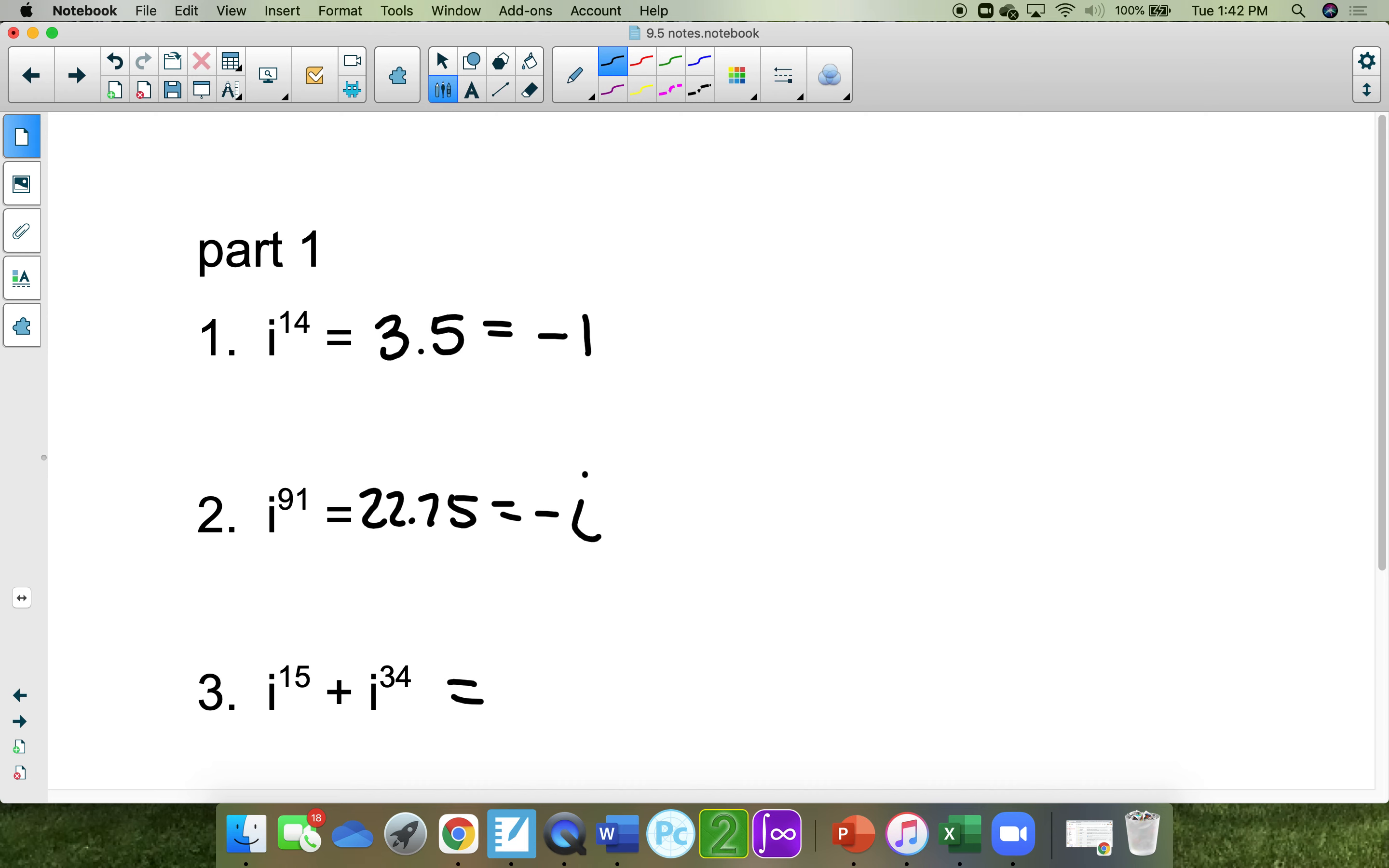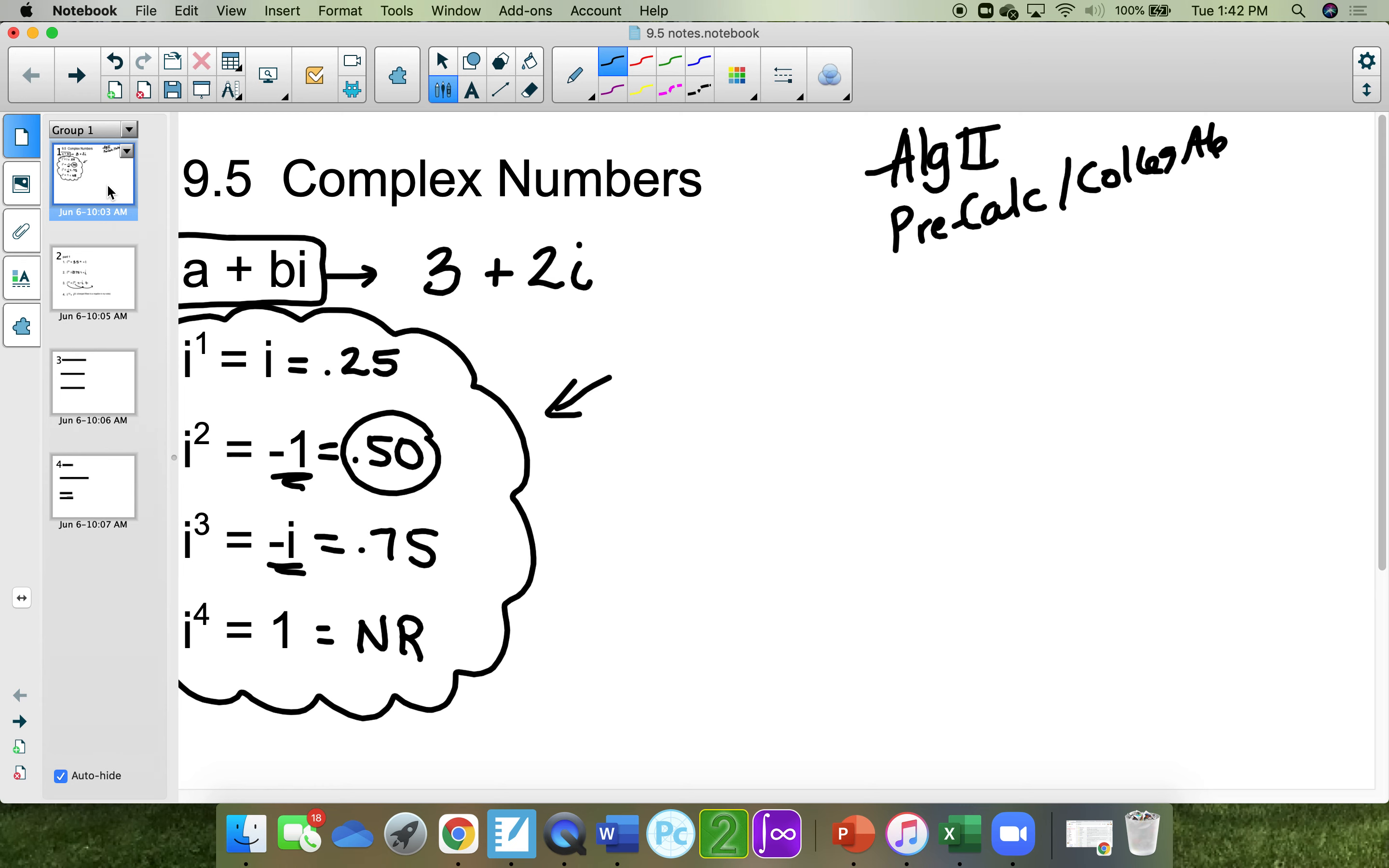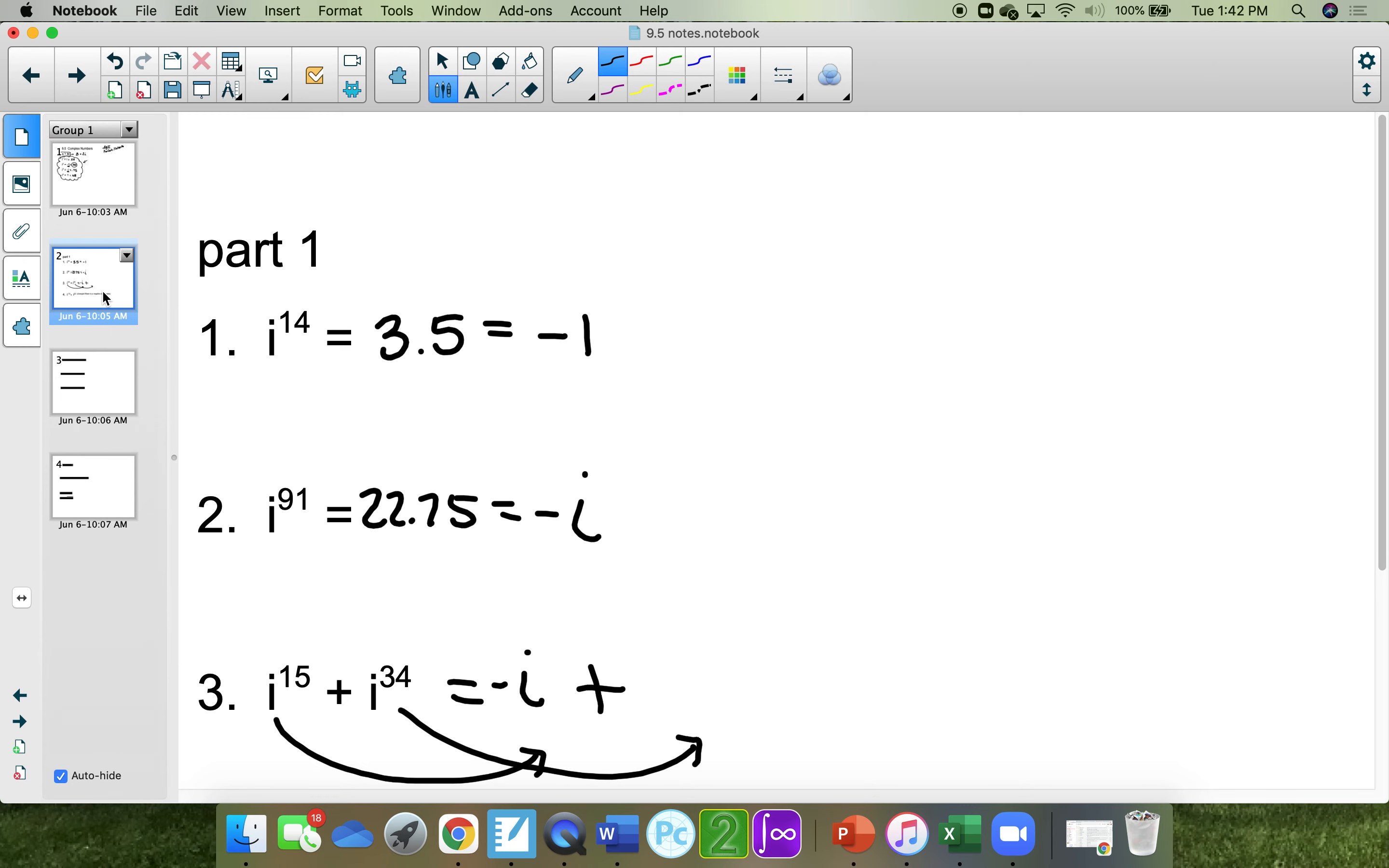On this one, i to the 15th plus i to the 34th, you would have to do each one of these separately and tell me what it is. i to the 15th, 15 divided by 4 is 3.75, which is a negative i. And then 34 divided by 4 is 8.5, which is equal to negative 1. That's all you can do. A negative i plus a negative 1. You cannot put those two together because one's an imaginary number and one's a real number.